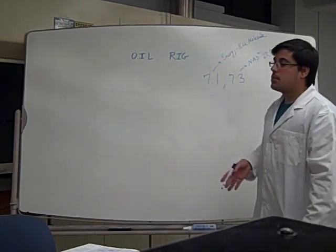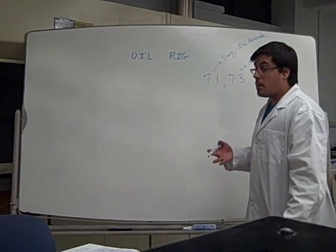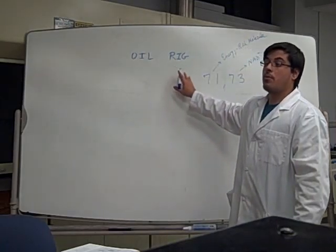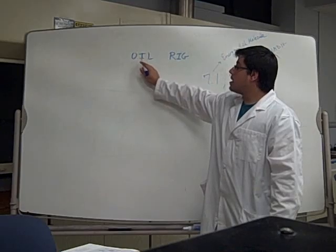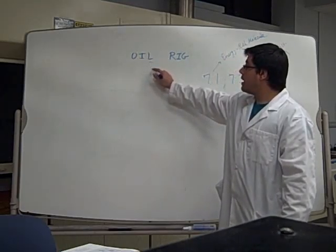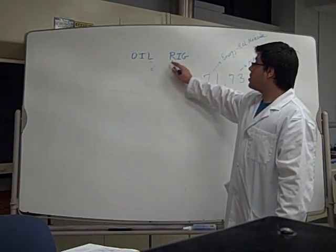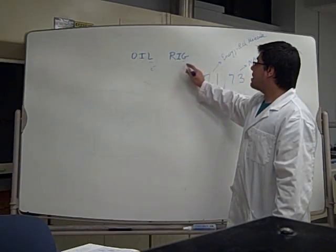Essentially, the way to remember it is by using the term OIL-RIG. With OIL, we have oxidation is loss of electrons, while RIG, reduction is gain of electrons.